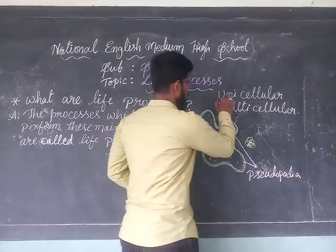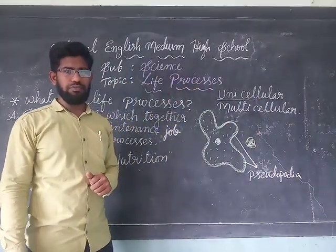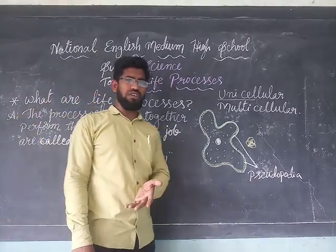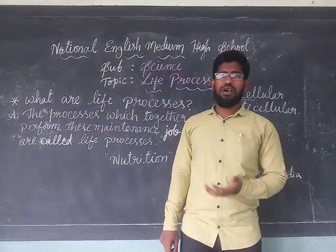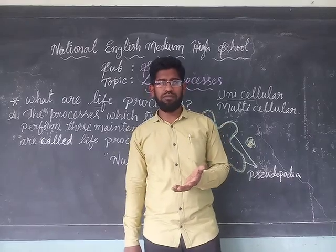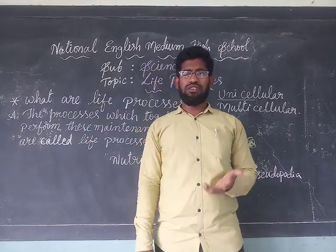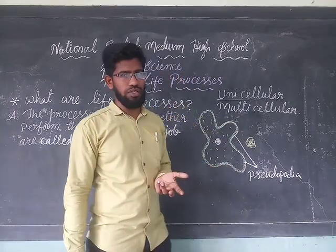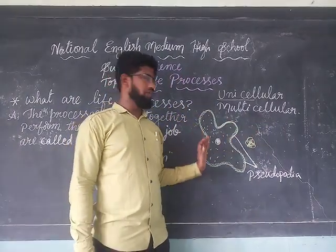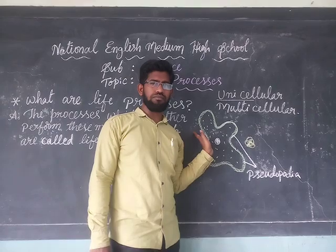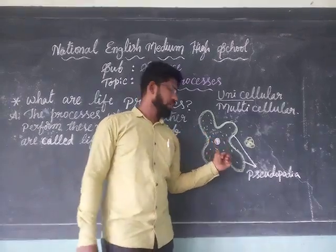Let's know what type of nutrition takes place in unicellular organisms. Examples of unicellular organisms are Amoeba, Paramecium, Euglena, and some bacteria. I have taken the example of Amoeba. Let's see how nutrition takes place in Amoeba.